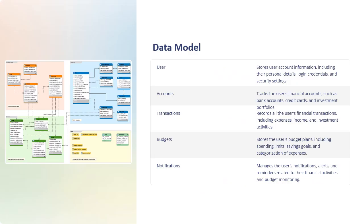Now let us see the data model. The Users entity stores user account information including personal details, login credentials, and security settings. The Account entity tracks the user's financial accounts such as bank accounts, credit cards, and investment portfolios. Transaction records all the user's financial transactions including expenses, income, and investment activities. Budget stores the user's budget plans including spending limits, savings goals, and categorization of expenses. Notification manages the user's notifications, alerts, and reminders related to their financial activities and budget monitoring.